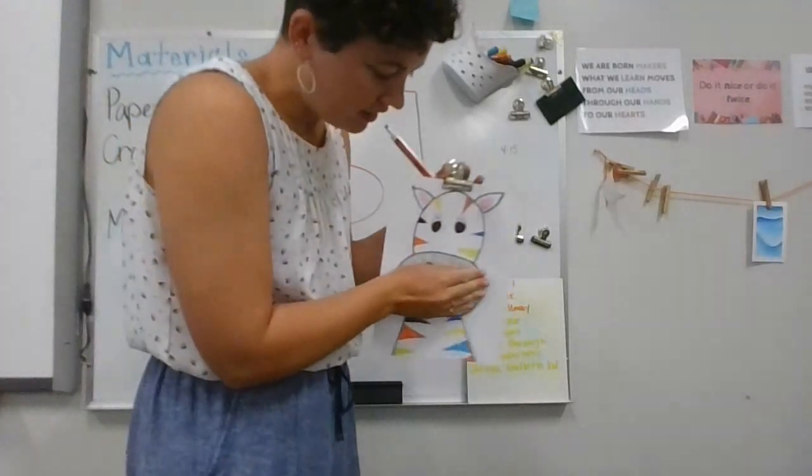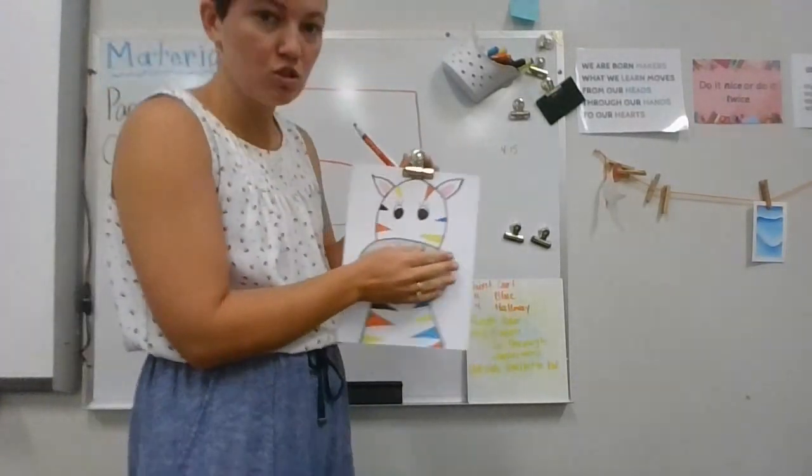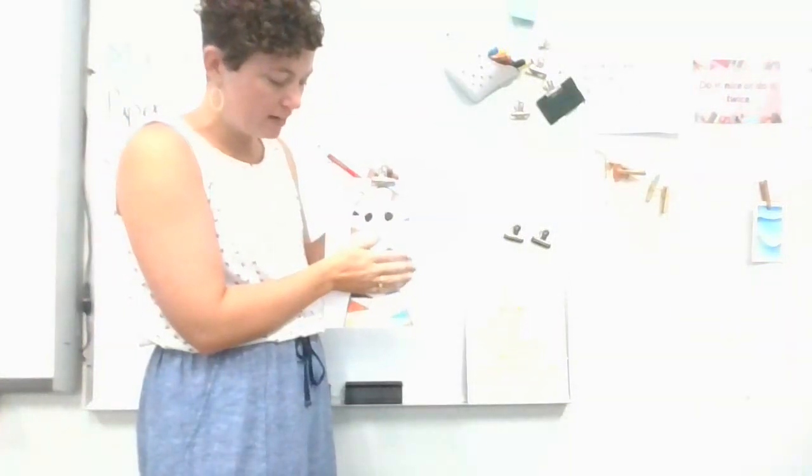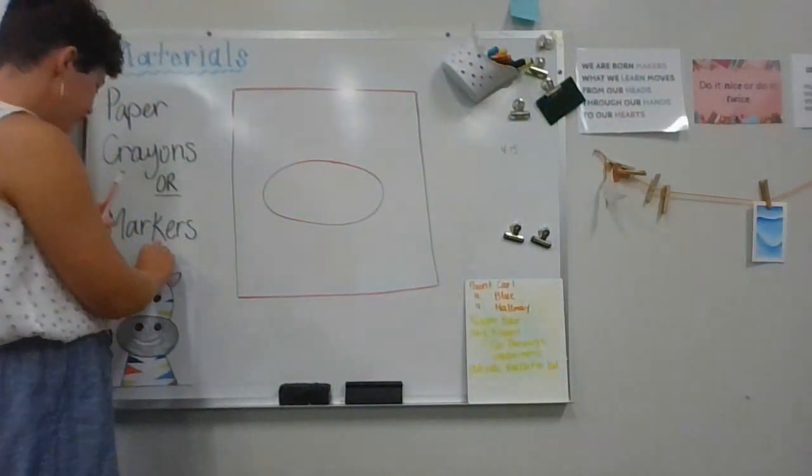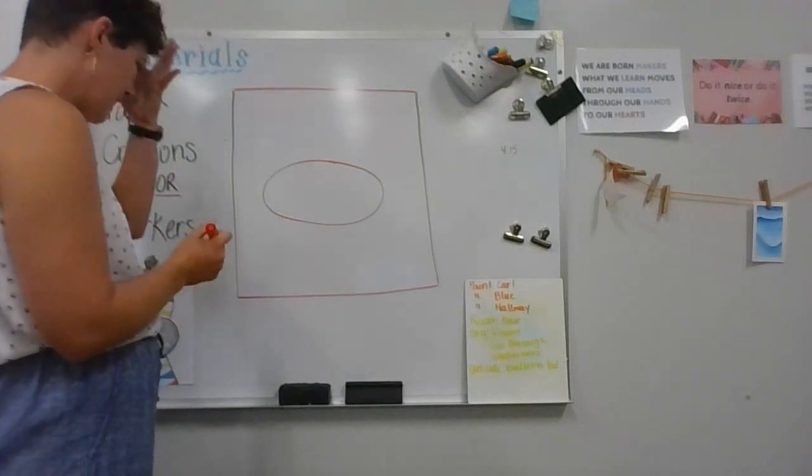One thing you might want to look at is if you notice on my piece of paper, I can almost fit my hand there. Now your hands are smaller, so you could probably fit both of your hands. So if it's big enough, you could probably fit your hand in there. Now if you've got your oval drawn, your next step is we're going to do his head.